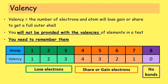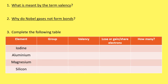Valency is really important and you will be using it when writing chemical formula. So let's see what you can remember. You can pause this video and have a go at these questions. The first question is: what is meant by valency? Why do noble gases not form bonds? And then there is a task where you'll need a periodic table to look up the group valency and work out whether those four elements lose, gain, or share electrons, and if so how many.